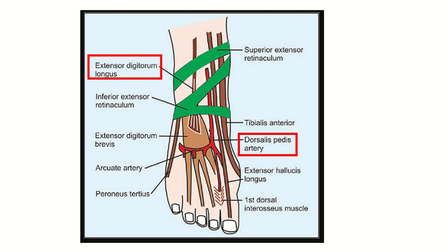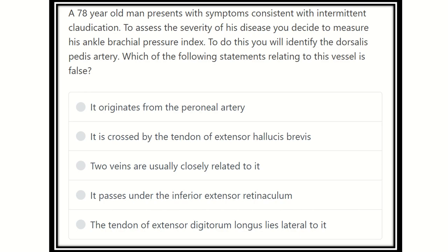Welcome to another question and answer session for the MRCS exam. A 78-year-old man presents with symptoms consistent with intermittent claudication. To assess the severity of his disease, you decide to measure his ankle brachial pressure index, and to do this you will identify the dorsalis pedis artery. Which of the following statements relating to this vessel is false?